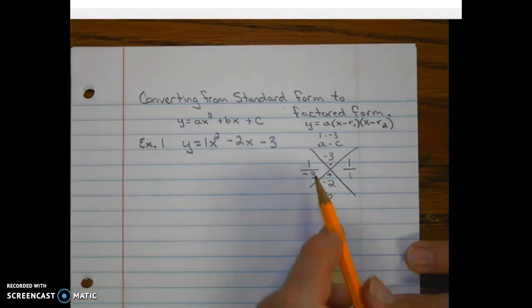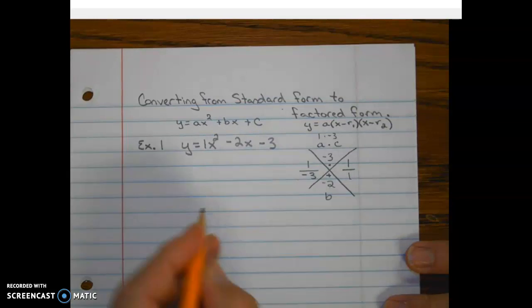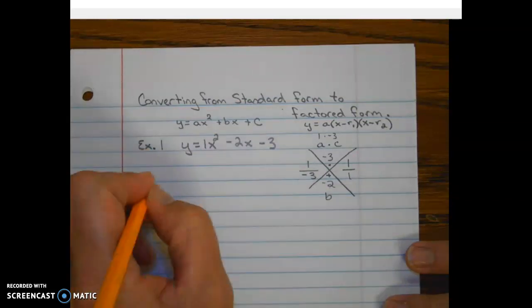So now we look at our two ratios and we ask ourselves this question, can I reduce them? And the answer is no. So since we can't reduce them, we can go ahead and write our factored form now.